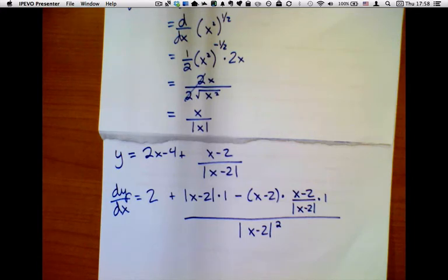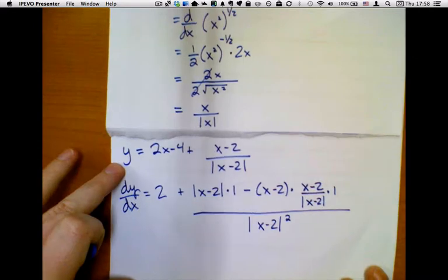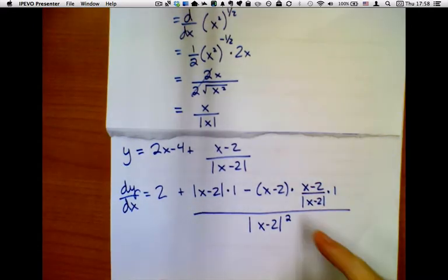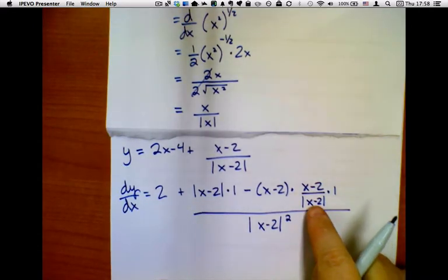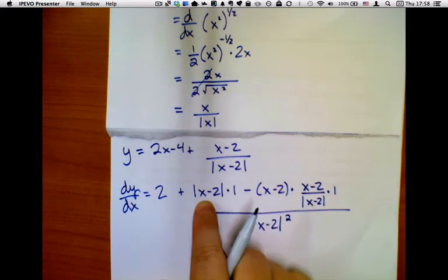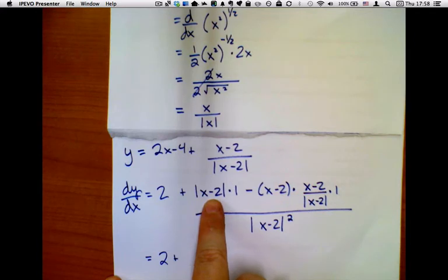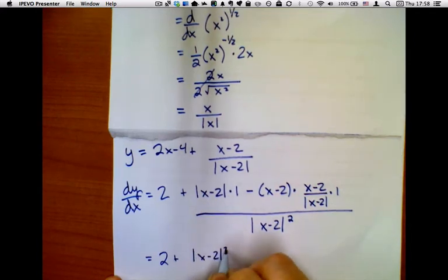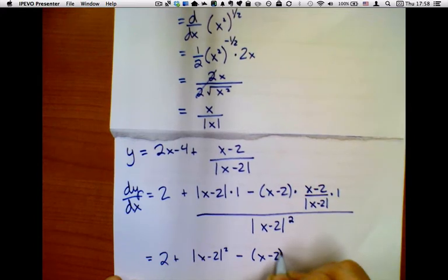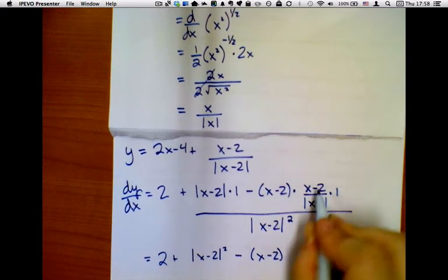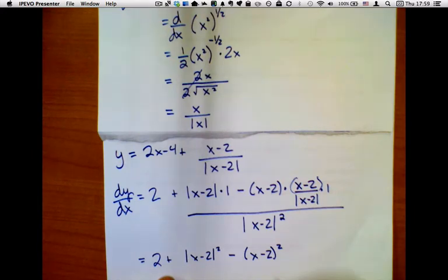We're actually done with the calculus part, and now we're just going to push numbers around. I'm thinking that I would like to get a common denominator, and that's what I'm going to do first. So, 2 plus, I'm going to multiply this by x minus 2 so that I have x minus 2 squared, and then minus x minus 2. X minus 2 times x minus 2 is x minus 2 squared. This is all over the absolute value of x minus 2.